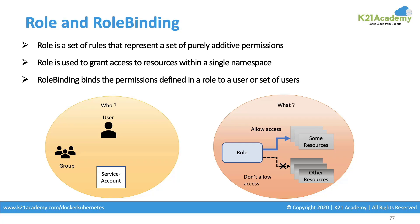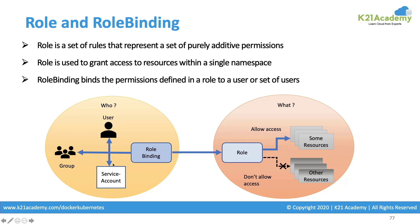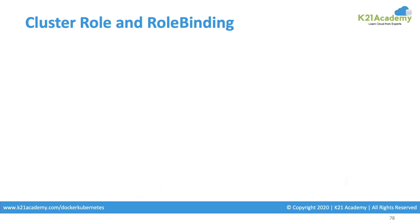Once the role is created, binding has to be done. You can say a user, a group of users, or a service account belongs to this role. Your subject can be one or all three of them, bound to this particular role. As soon as you bind them, the set of actions defined inside the role can be performed by that user, set of users, or the resource tied to the service account. This is all at the namespace level — a role and a role binding.